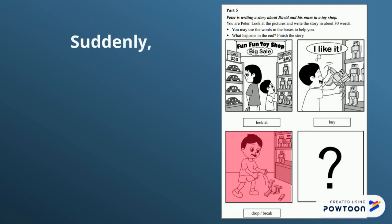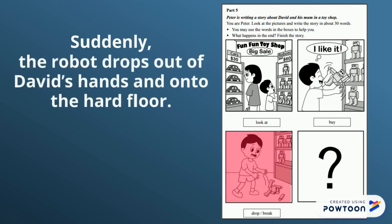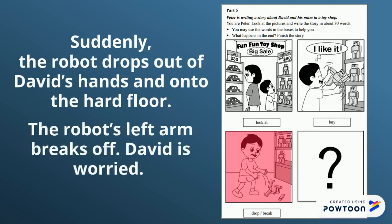Suddenly — something happens very quickly — the robot drops out of David's hands and onto the hard floor. The robot's left arm breaks off. David is worried. Here I have mentioned 'drop' and that the robot breaks.